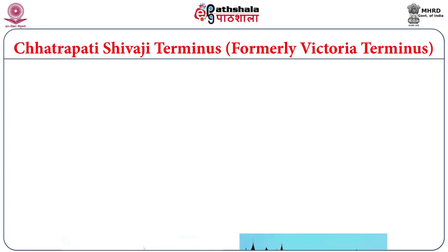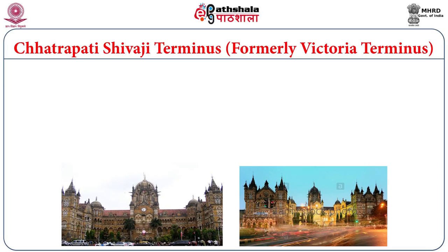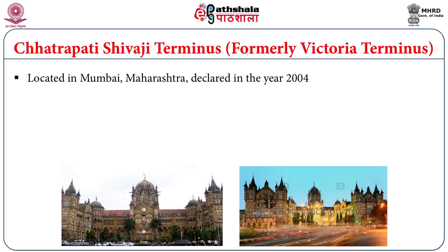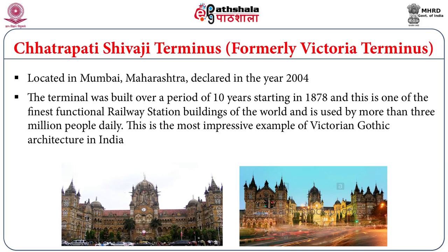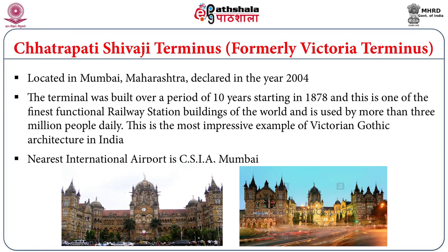The Chhatrapati Shivaji Terminus, earlier known as Victoria Terminus, is located in Mumbai in the state of Maharashtra. This monument was declared as a World Heritage Site in the year 2004. This terminal was built over almost 10 years and is one of the finest functional railway station buildings in the world even today. It is used by more than 3 million people per day. It is the most impressive example of Victorian Gothic architectural style in India, and its location makes it well connected to all modes of transportation.